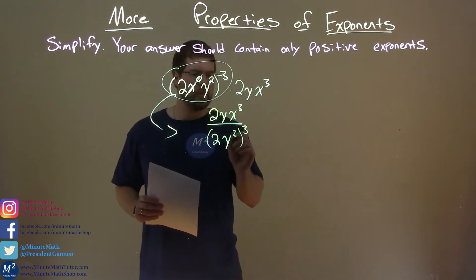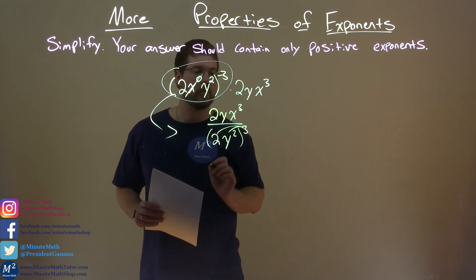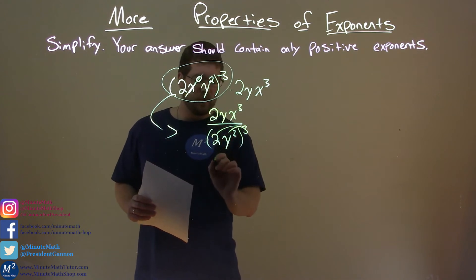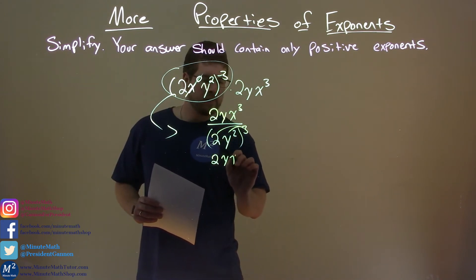Okay. Well, now let's distribute it. 3 can go to both parts here. The numerator stays the same, 2yx to the third, denominator,